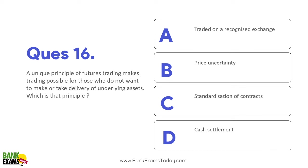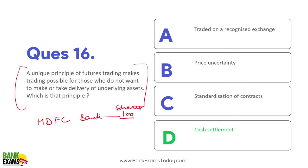Question 17: A unique principle of futures trading makes trading possible for those who do not want to make or take delivery of the underlying asset — that principle is cash settlement. For example, if you buy HDFC Bank shares you hold them in your depository account. But in futures, at expiry if you are making profit, that profit is settled in cash — delivery is not given. That is the unique principle of futures trading.